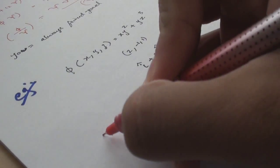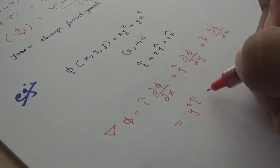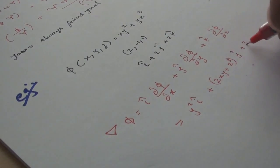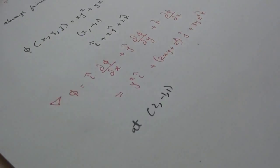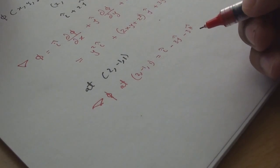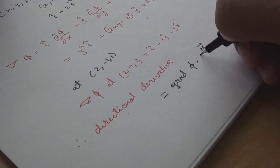So the gradient equals to y²i plus (2xy plus z³)j plus 3yz²k and at (2, -1, 1) it equals i plus 3j minus 3k and the direction derivative equals minus 11 by 3.